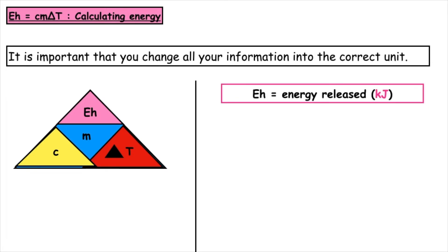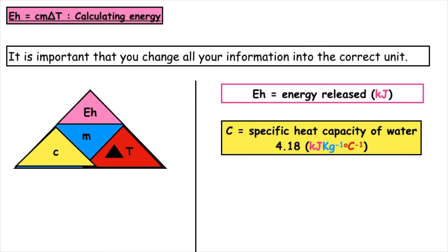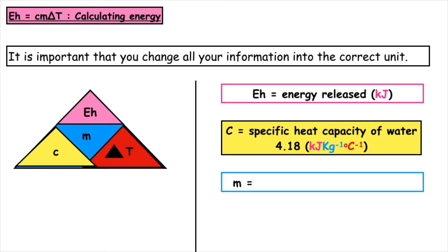C, which is the specific heat capacity of water, can be found in your data booklet and is always 4.18. The mass of water heated would be measured in kilograms or litres, so we need to know that one litre is equal to one kilogram.